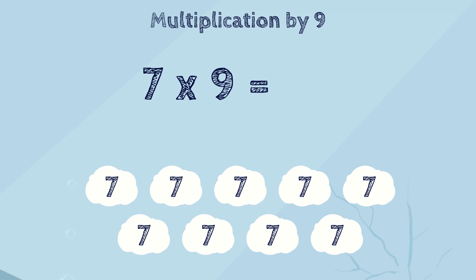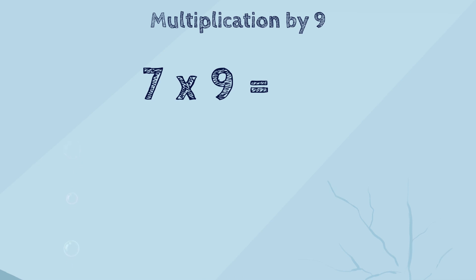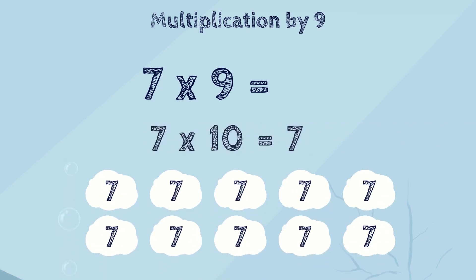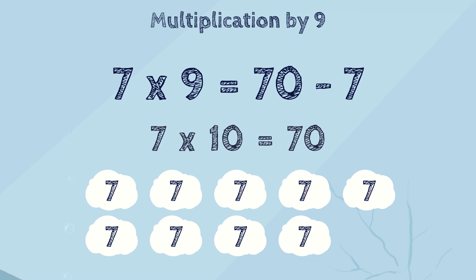This isn't the whole trick yet. We know how to easily add seven ten times — that's seven times ten, which is seventy. So we know the answer when adding ten sevens, but we need only nine in this problem. What can we do? We can subtract one seven! Yes, you're right. If you know the answer of adding ten sevens but you need only nine sevens, you can subtract one seven from the answer. So it will be seventy minus seven, and that's sixty-three.